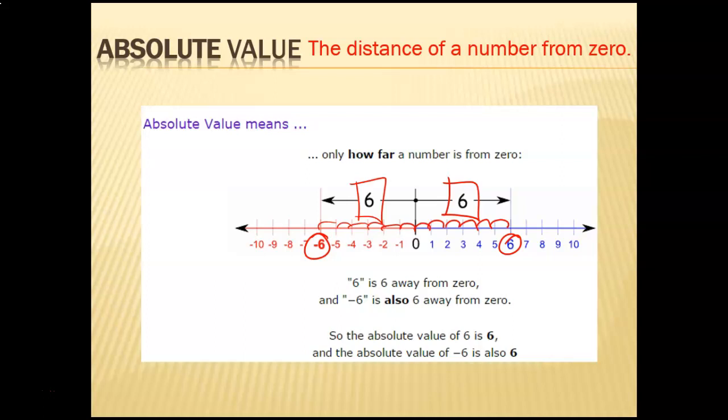Distance is always represented in a positive manner. We don't say it's negative 6 spaces away from zero, just like we don't drive negative 50 miles. Distance is always measured in a positive value. So to take the absolute value of a number, you want to know how far it is from zero. What is the absolute value of 12? What about negative 19? Just 19 — it's 19 spaces away from zero. Your answer will always be positive.